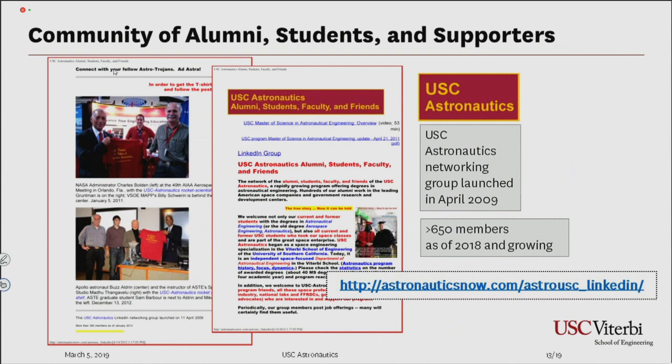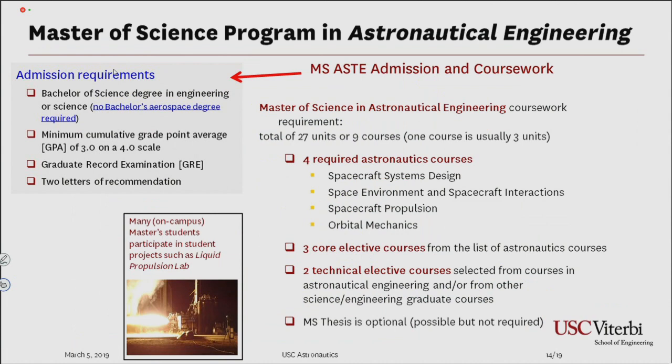Our alumni maintain a LinkedIn group with more than 600 to 700 members from students who took our courses over the last 10 to 15 years, which is very important for networking. As Megan mentioned earlier about the importance of the Trojan Family Network, we also have targeted networking for our students focused specifically on the space engineering area.